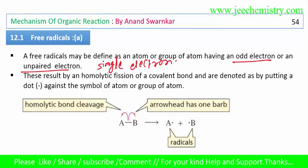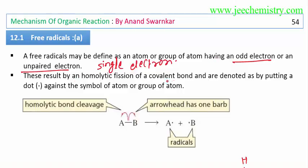Free radicals result from the homolytic fission of covalent bonds, and are denoted by a dot against the symbol of the atom or group of atoms. When fission occurs in a covalent bond, one electron goes to atom A and one electron goes to atom B — each with one electron, making them free radicals.